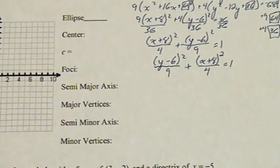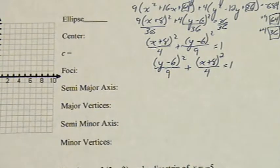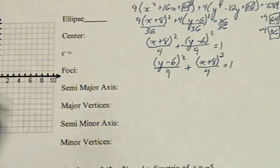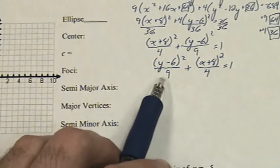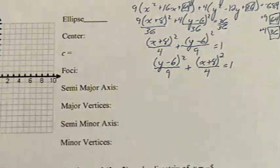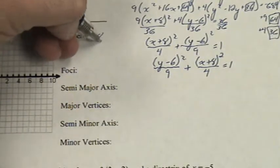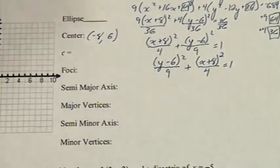This is an ellipse in standard form for which we're going to find all the required information for graphing. First we'll find the center. Even though the y is listed first, we're still going to start with the x. So the center is negative 8, comma 6.